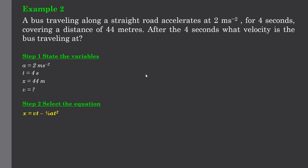And it is x equals vt take a half at squared, bit of a complex looking equation. We now sub our values in again, so x was 44, so we sub that in for x.